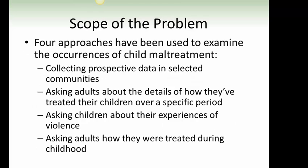Scope of the problem. Four approaches have been used to examine the occurrences of child maltreatment: collecting prospective data in select communities; asking adults about the details of how they've treated their children over a specific period; asking children about their experiences of violence; and asking adults how they were treated during childhood.